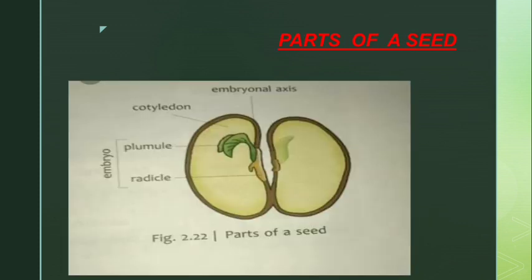The embryonal axis has two parts: radicle and plumule. The radicle grows downward into the soil and gives rise to the root system. The plumule forms the first leaves of the baby plant, grows upward above the soil, and gives rise to the shoot system. These are the parts of a seed.